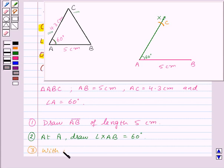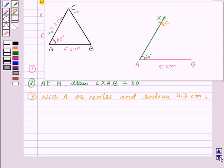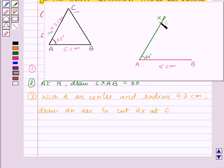With A as center and radius 4.3 cm, draw an arc to cut AX at point C. Now to get the triangle ABC, join BC like this. So our fourth step of construction is join BC.